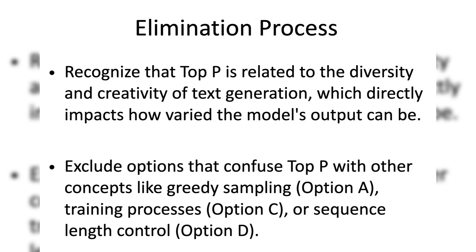To solve this question, the first step is to understand the purpose of each option and then eliminate ones that clearly don't fit. Recognize that top P is related to the diversity and creativity of text generation, which directly impacts how varied the model's output can be. Exclude options that confuse top P with other concepts like greedy sampling (Option A), training processes (Option C), or sequence length control (Option D).